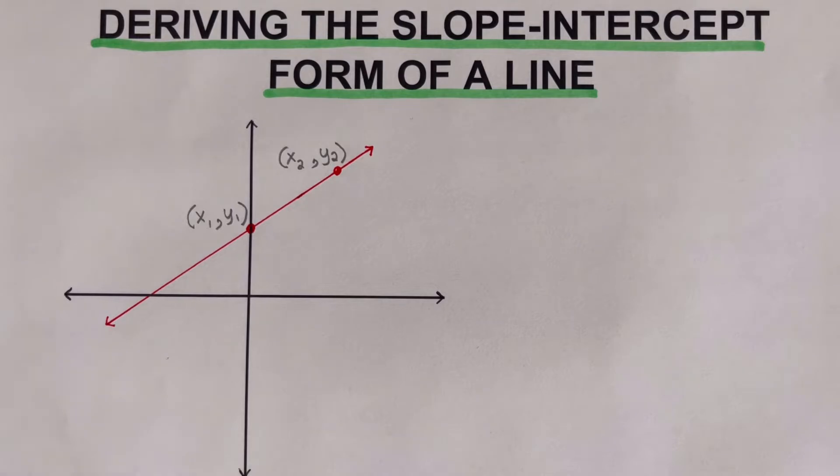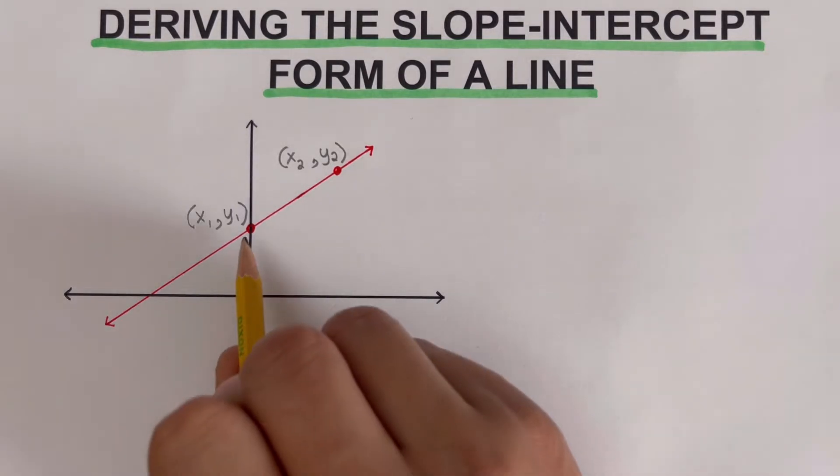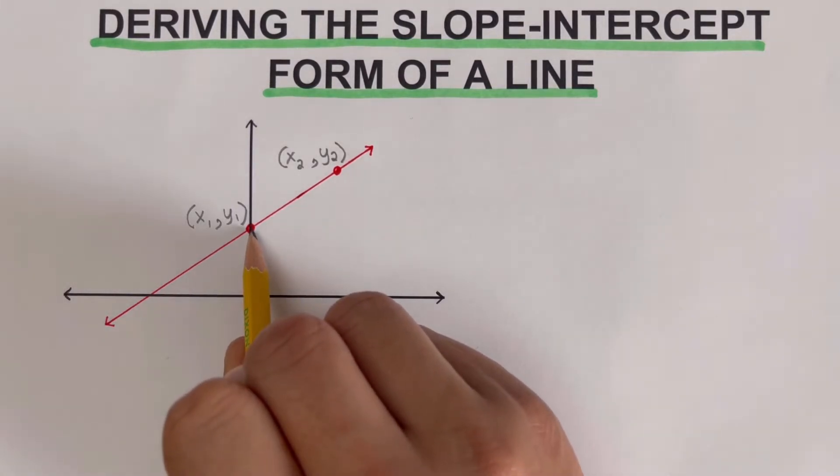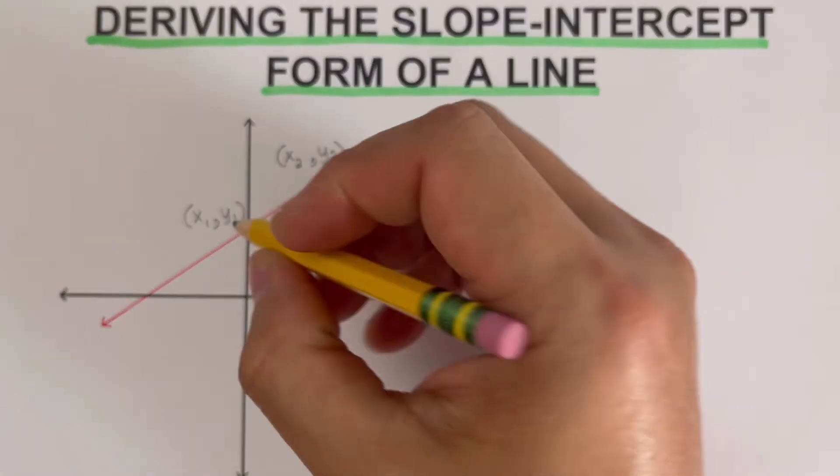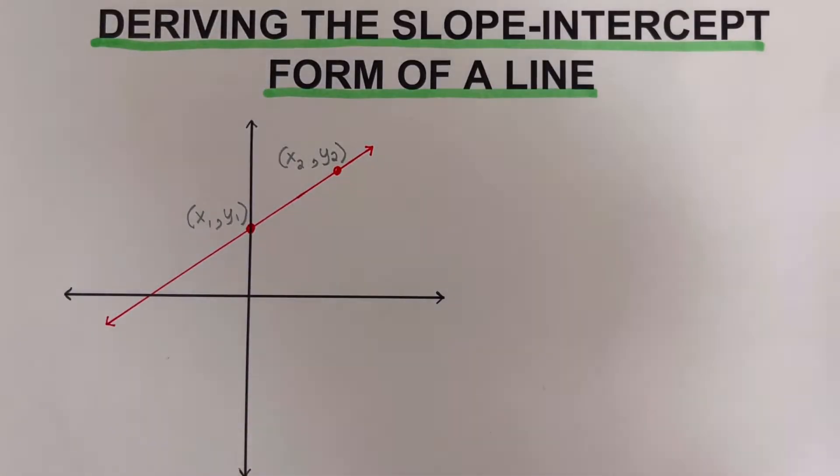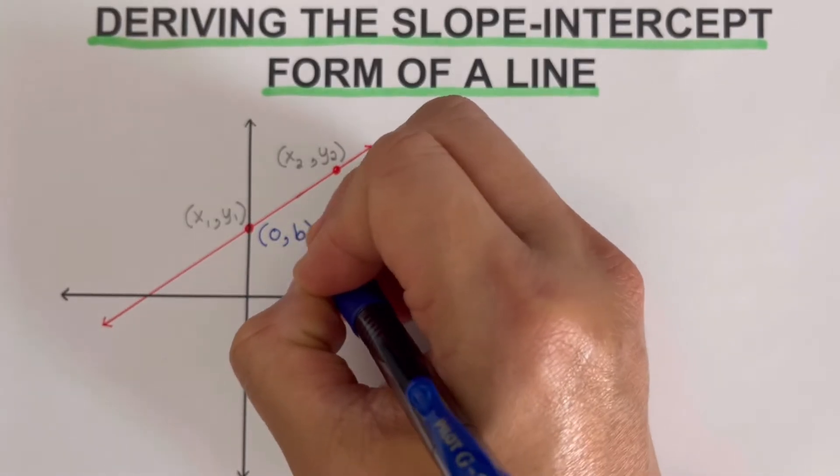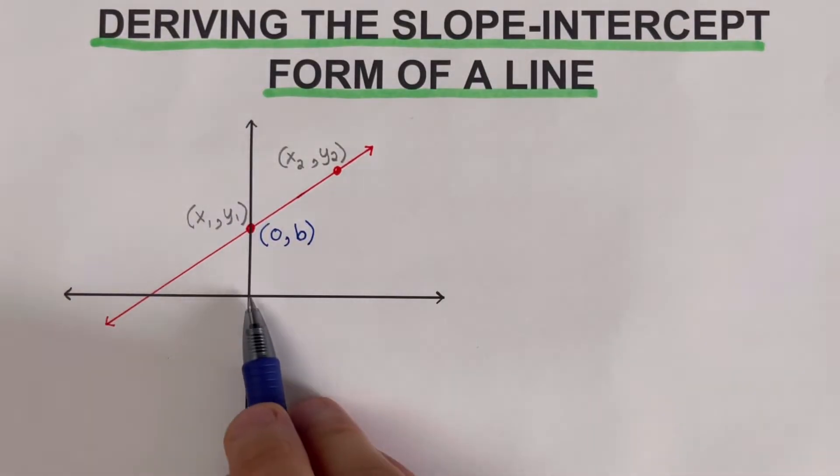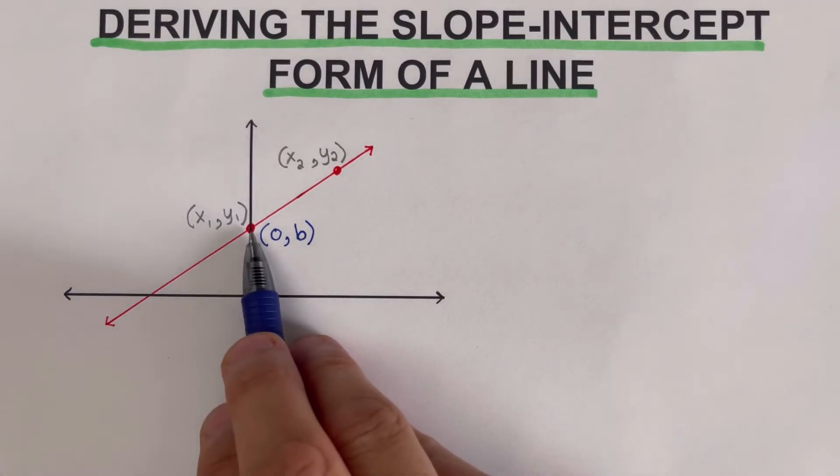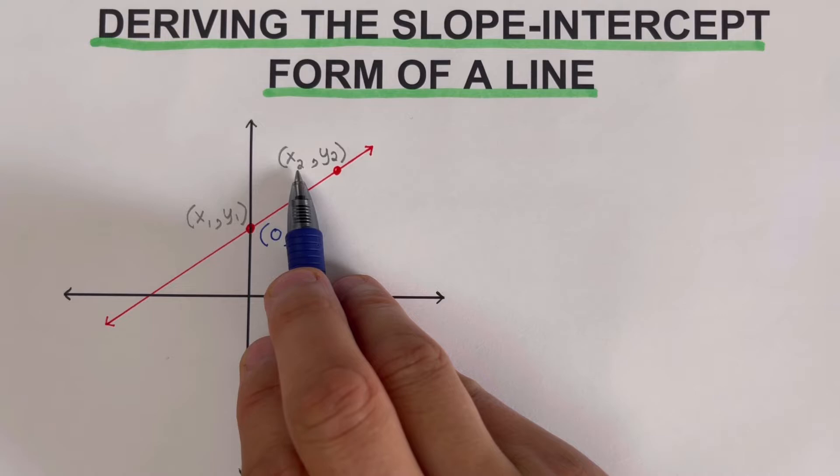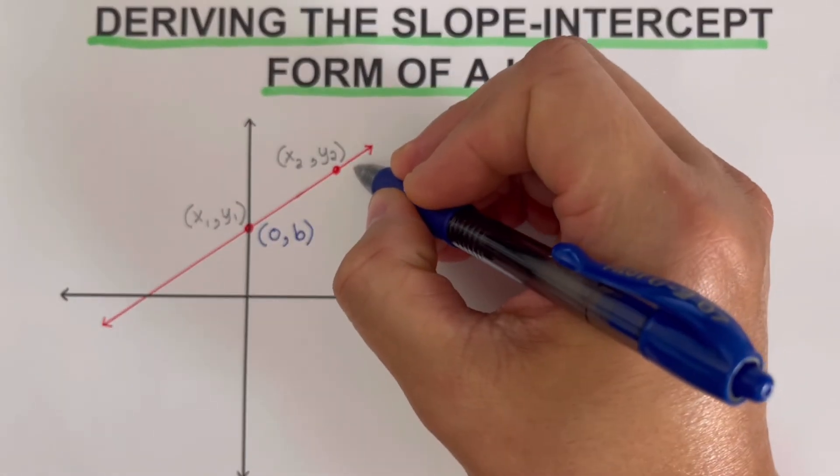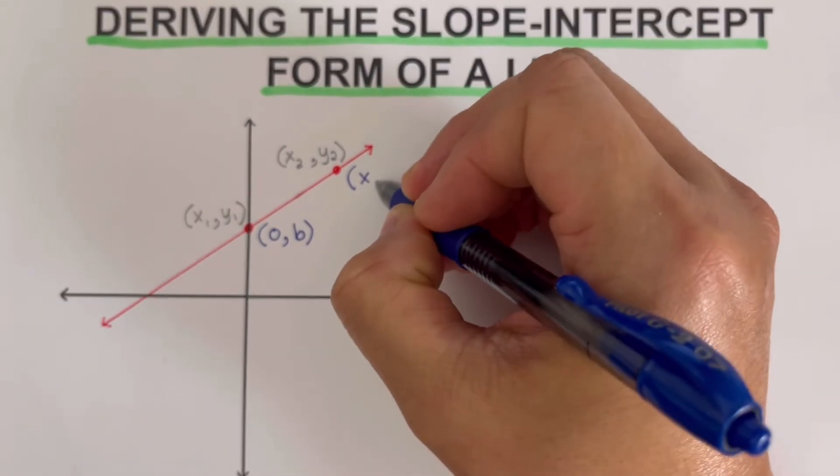Now we can have a special label for this point right here, since this touches the y-axis. So this will have a coordinate of 0, and let's name that as b, which is the y-intercept. So the x here is 0, and the y value here will be b. And so instead of writing x sub 2, y sub 2, we're going to label this as our x, y.